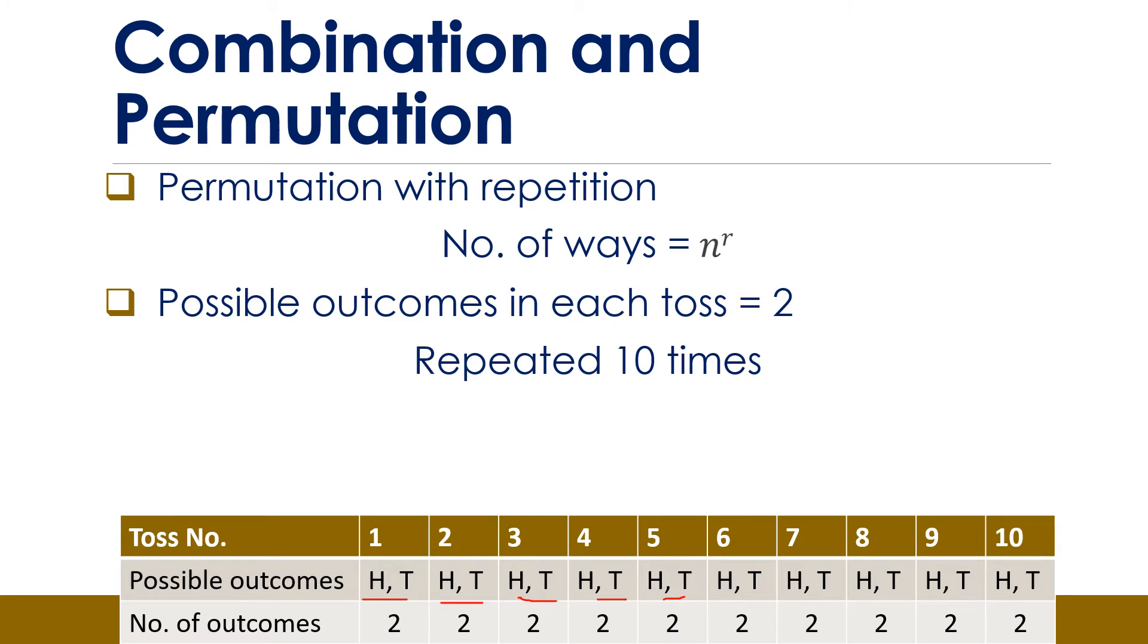Thus, the total number of possible outcomes will be determined by taking N to be equal to 2 and R to be equal to 10. And so, the total number of possible outcomes will be equal to 2 raised to power 10, which is equal to 1024.